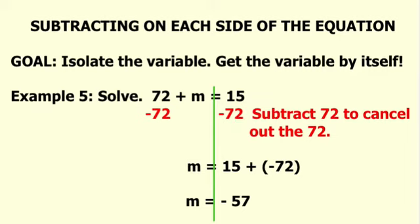72 minus 72, it cancels out. Some students like to put a slash through it. So therefore, your variable m is now isolated.